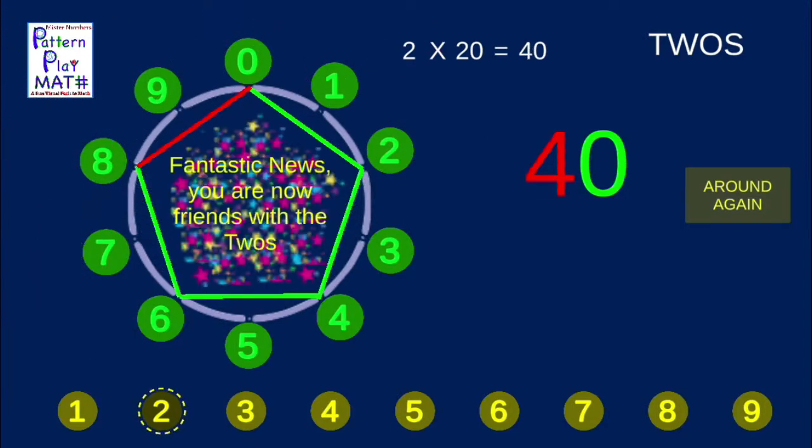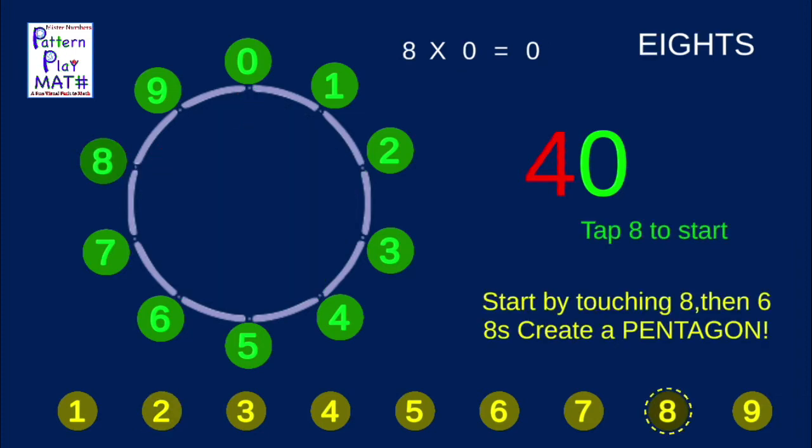If we go around 2 more times, we might find a fun message. So that's how it works. Let's pick a big number on the bottom, like 8's.